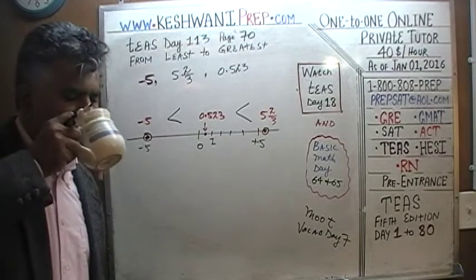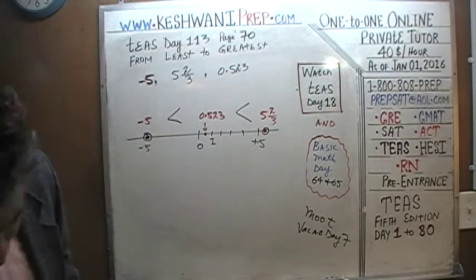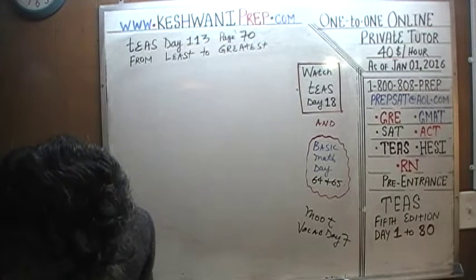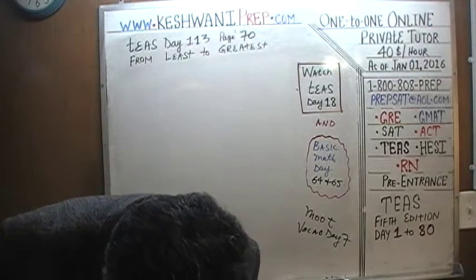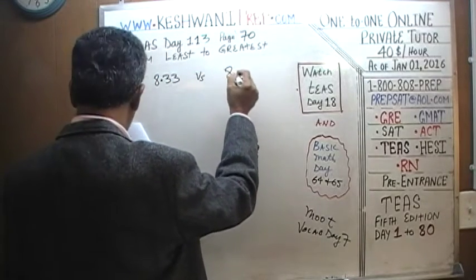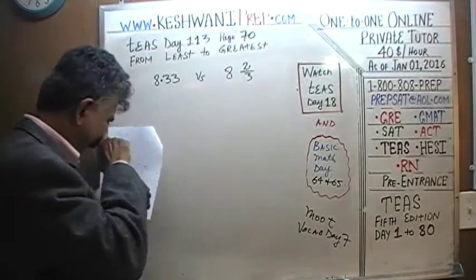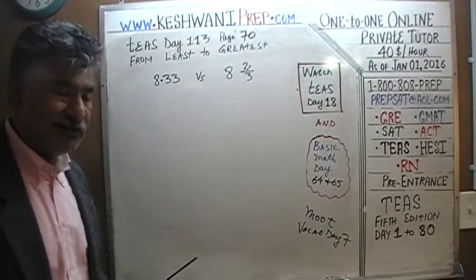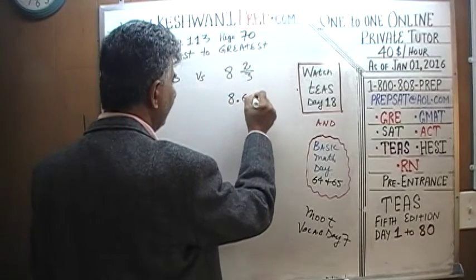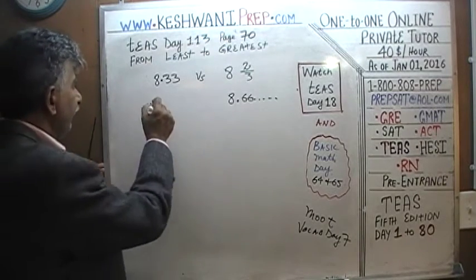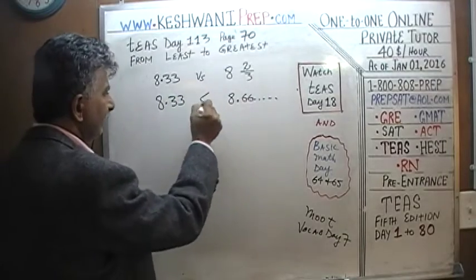Let's move on to number 2. In number 2, it asks which of the following is an expression to compare 8.33 versus 8 and 2 thirds. This is a bit tricky, so pay attention. 8 and 2 thirds — we know that 2 thirds is 0.6 repeating, so 8 and 2 thirds is 8.66 repeating. It just goes on and on forever. So it turns out 8.33 is less than 8.66.